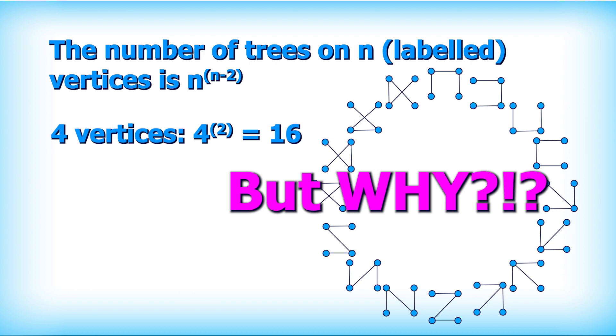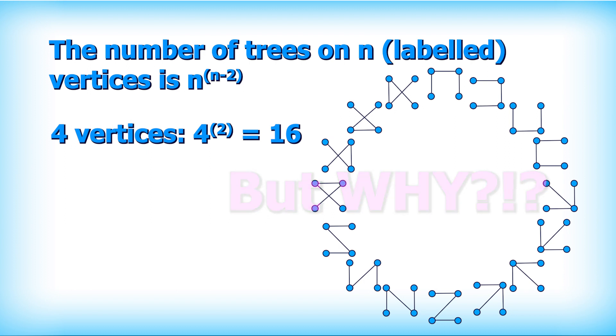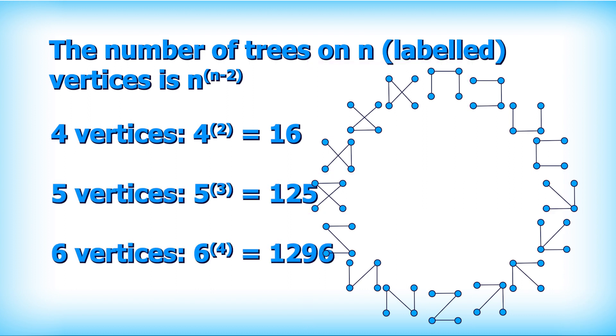But why is that the case? You might think, 4 times 4, yeah I can break these 16 into 4 groups of 4, but how would that work for 5 to the power of 3 or 6 to the power of 4?